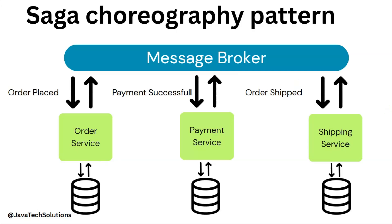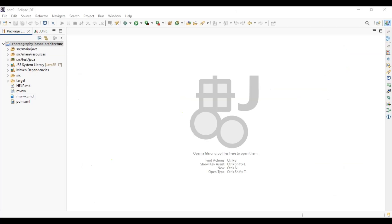Now we are going to create a Spring Boot application where we need to create microservices — let's say order microservice — and from the order microservice we push data to the event, payment service will pull the data from the events, and similarly for the shipping service. Let's build one Spring Boot application step by step. First of all, for creating and implementing this choreography saga pattern into our REST architecture, we need to create one Spring Boot application.